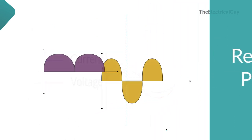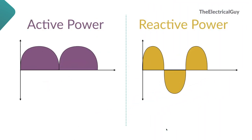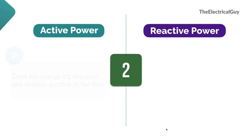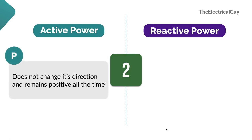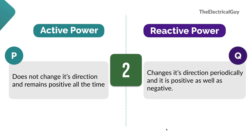Looking at the waveforms clearly: active power is always on the positive side, whereas reactive power is on the positive side as well as the negative side. From this we can conclude that active power does not change its direction and remains positive all the time, whereas reactive power changes direction periodically — it is both positive and negative.